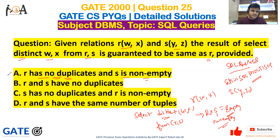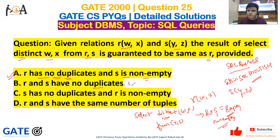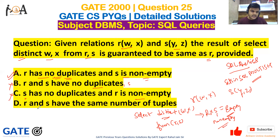Option A is 100% correct. Now let's analyze the other options. Option B says R and S have no duplicates — but it does not mention that S should be non-empty. If S is empty, the result would be an empty set. That is why Option B is false.